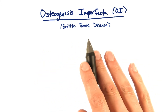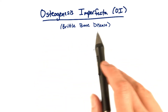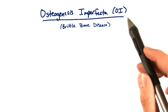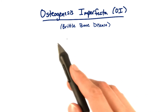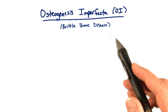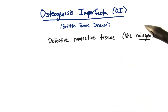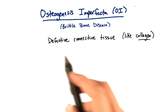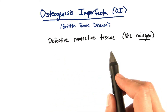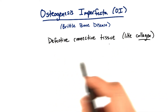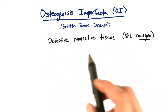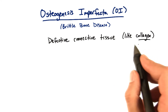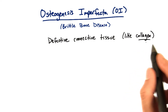Let's move on to another trait: osteogenesis imperfecta, OI, sometimes known as brittle bone disease. People with OI are born with defective connective tissue, or sometimes without the ability to make it, usually because of a deficiency in collagen.